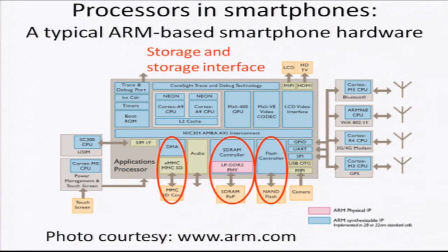It has an ARM Cortex R4 3G/4G modem processor for handling the communication part. It has a SIM interface and control which also includes an SC300 CPU. For storage, this example has an MMC memory card, typical SDRAM memory which in this case is low-power DDR2, and also a NAND flash card along with a flash controller.